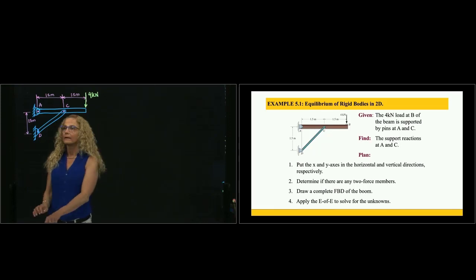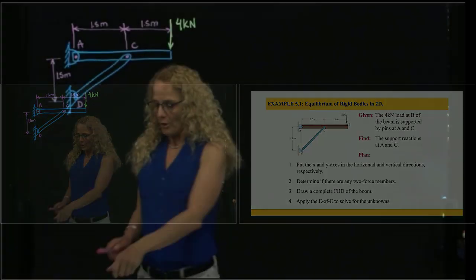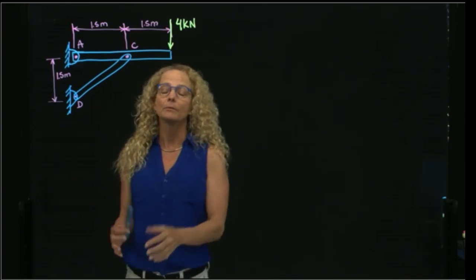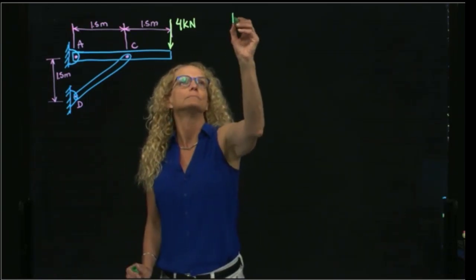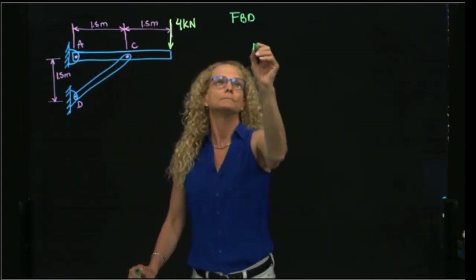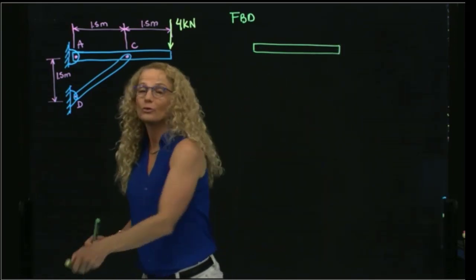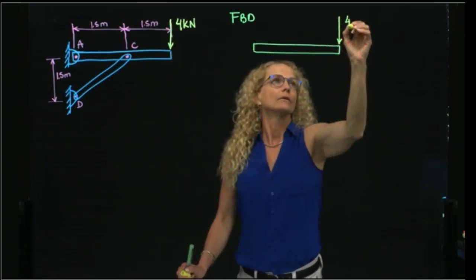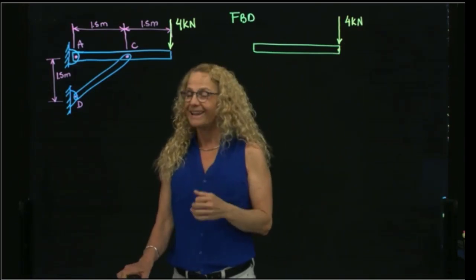And we want to find the reactions at A, which is a pin, and at C. The first thing that we always want to do in a rigid body equilibrium problem is to do the free body diagram. So let's draw the free body diagram. I will draw the free body diagram of this beam right here. So I do the active forces. The active forces that I have is a 4 kN force applied to this point, and then I do the reactive forces.